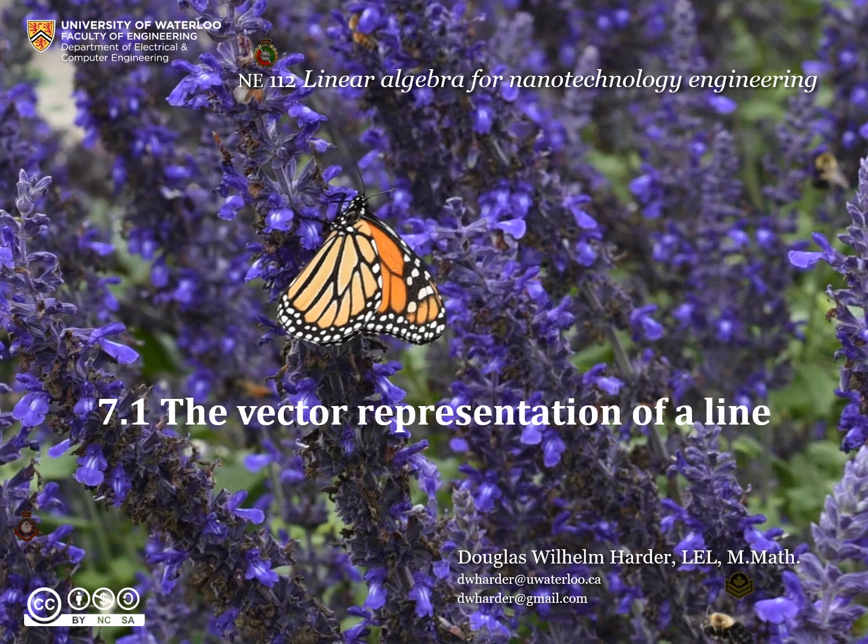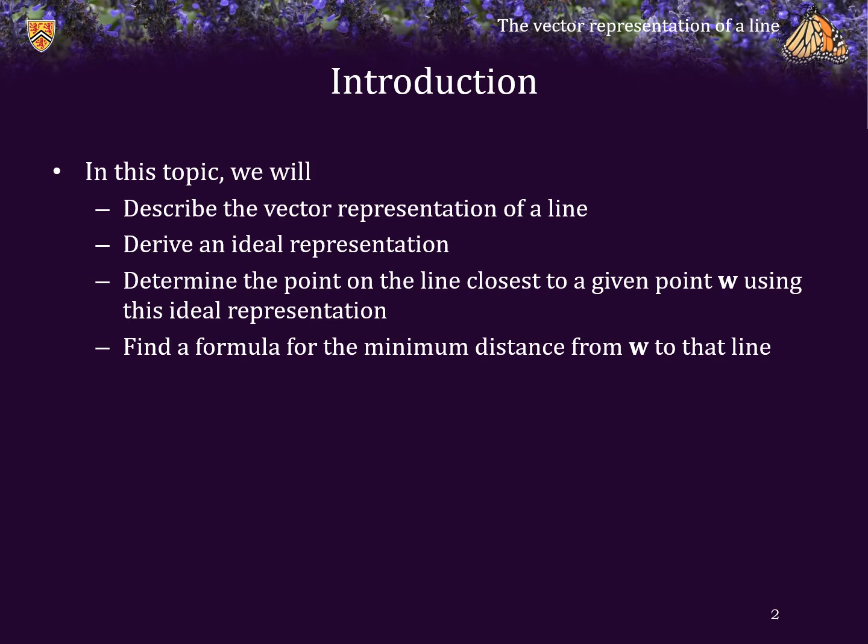Good day. For those of you who do not know me, my name is Douglas Harder. In this topic, we are going to discuss the vector representation of a line. We will describe the vector representation of a line in R³, derive an ideal representation, and then determine the point on that line that is closest to a given arbitrary point w using the ideal representation. We will find a formula that calculates the minimum distance from an arbitrary point w to a particular given line.